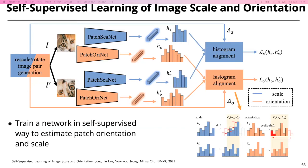One technical note: some patches are symmetrical. If you train a regressor that outputs only one orientation, it cannot handle symmetries. More recent work outputs a histogram or distribution of orientations and applies a loss on these distributions, allowing multiple orientations for a single feature - important for symmetric objects.